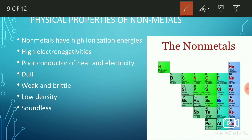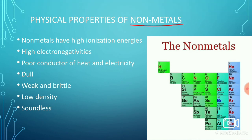Now let's see the physical properties of non-metals. Non-metals have high ionization energies — this is just the opposite of metals. The next properties include high electronegativities, poor conductors of heat and electricity, dull appearance, weak and brittle, low density, and soundless.